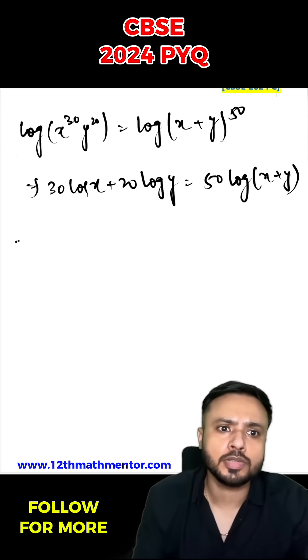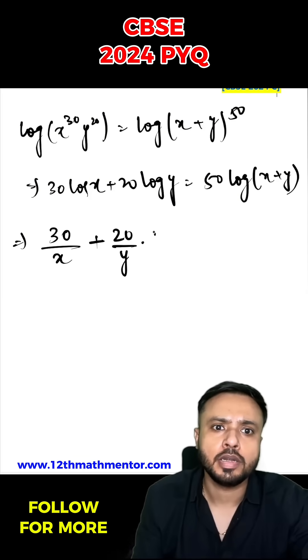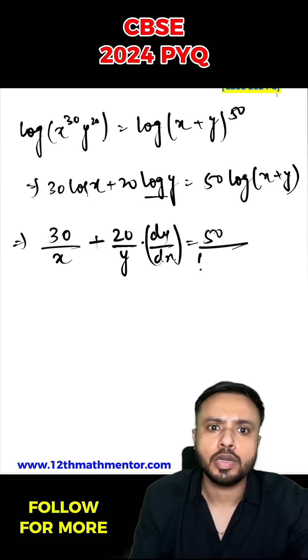And now I'm going to differentiate both sides with respect to x. So this will be 30 upon x because the derivative of log x is 1 by x plus 20 upon y into dy upon dx. So I've used chain rule here equals to 50 upon x plus y into 1 plus dy by dx.